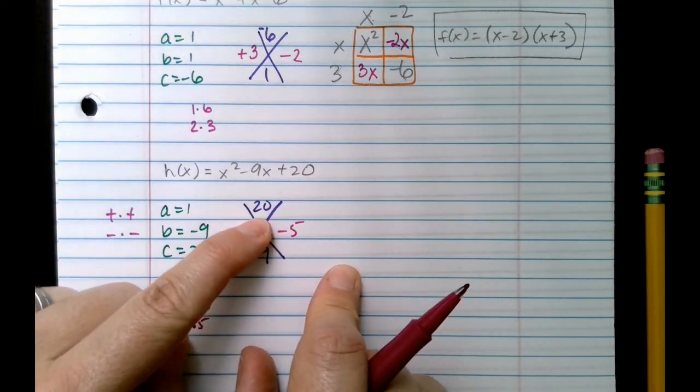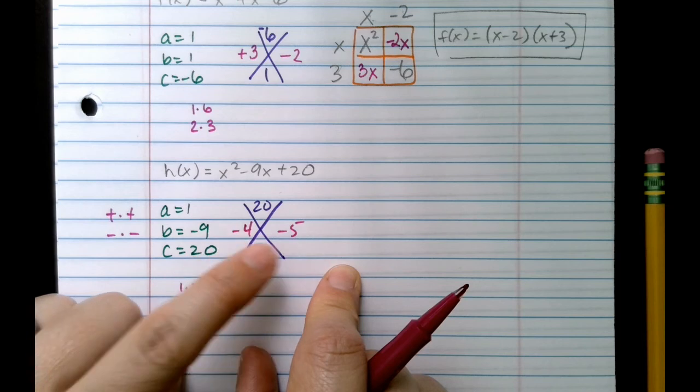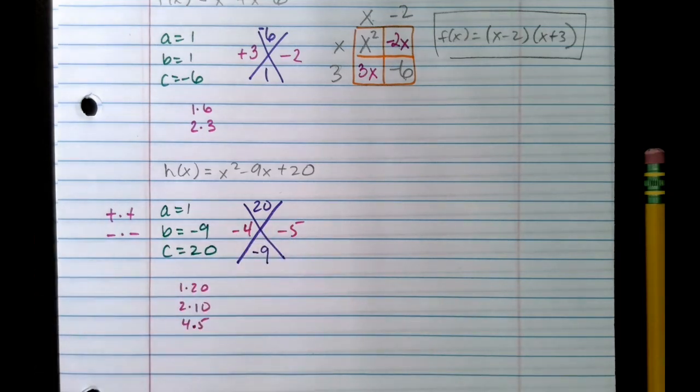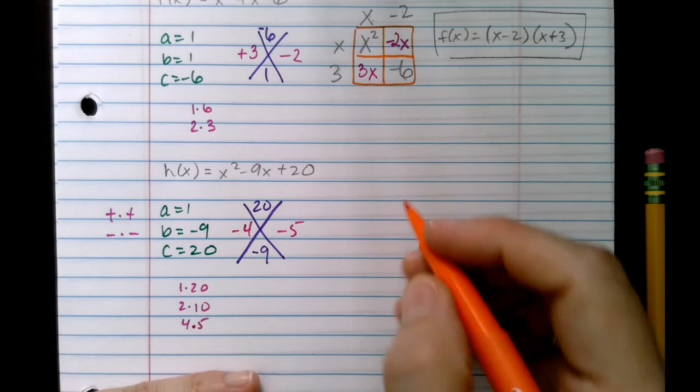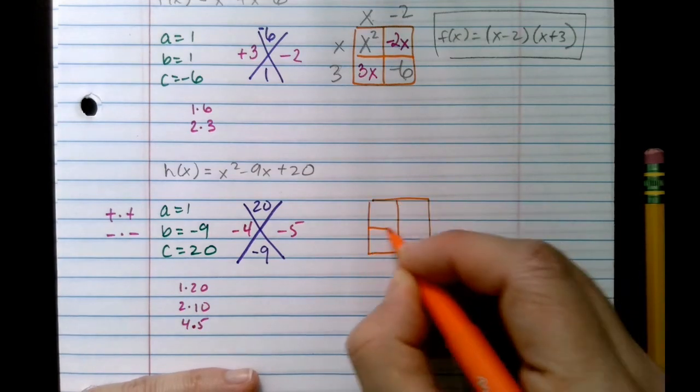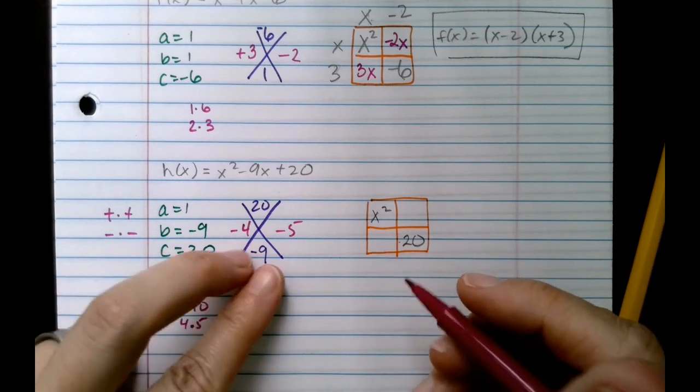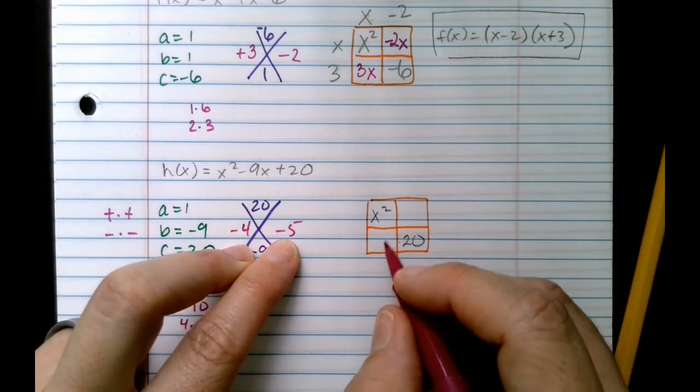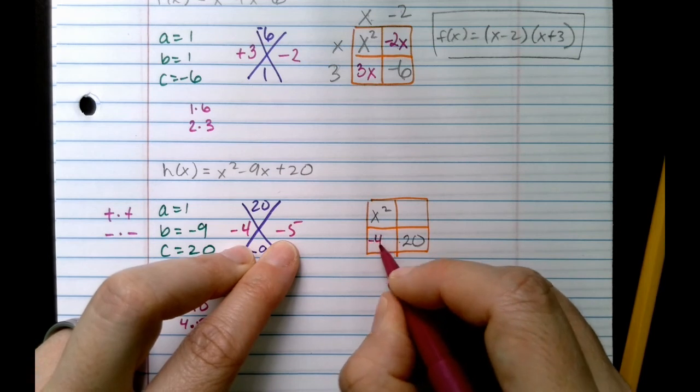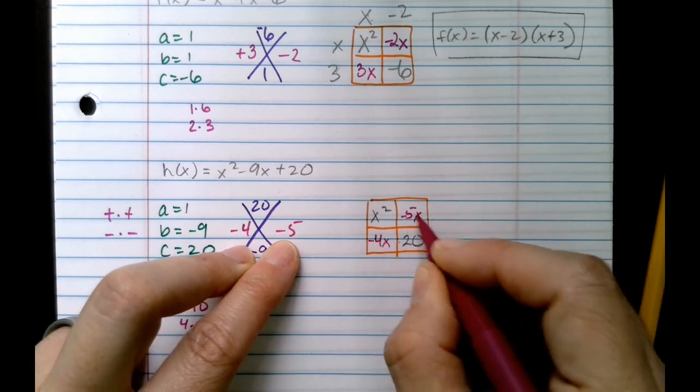Now we have our pieces, so let's make our factor box. Again, I'm going to put in my two numbers here into these boxes in any order, and they're going to become linear terms. What that means is you put an x next to it, just like that.